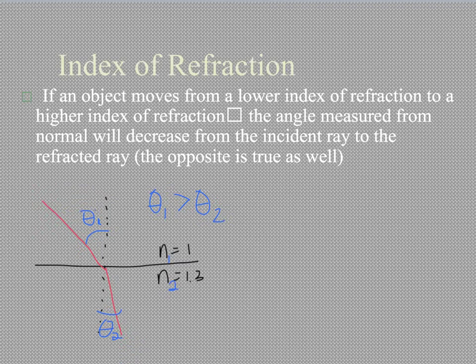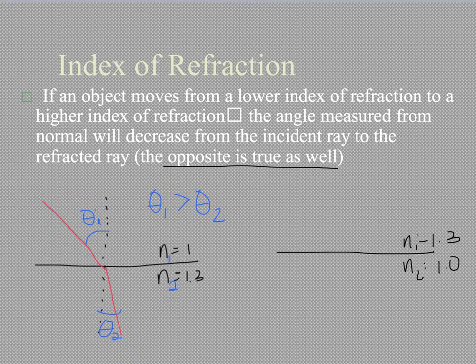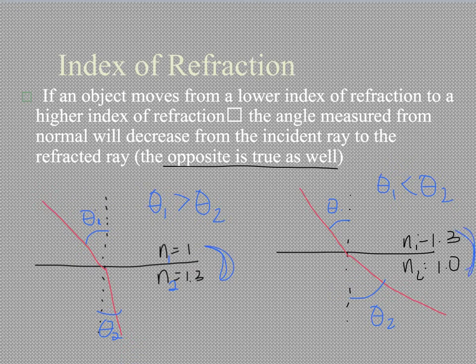Now if we switch that around, the opposite is true as well. So if instead now we have n equals 1.3 as our n1, and our n2 is 1.0, then the opposite will happen. So we've got our normal line, and this will come in here, and then it's going to bend greater. So this angle and this angle, theta 2 and theta 1, theta 1 will now be less than theta 2. So we can always tell whether it will bend more or less depending on how the indices of refraction compare.